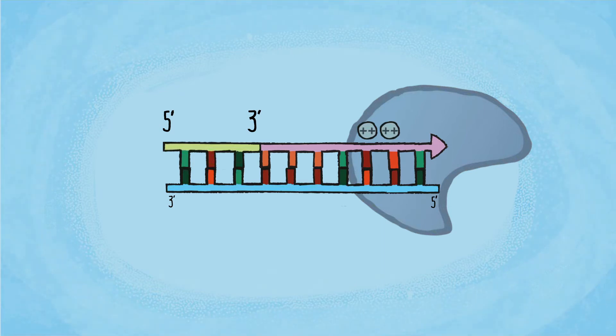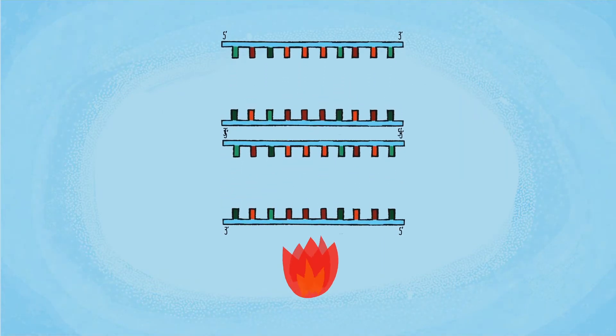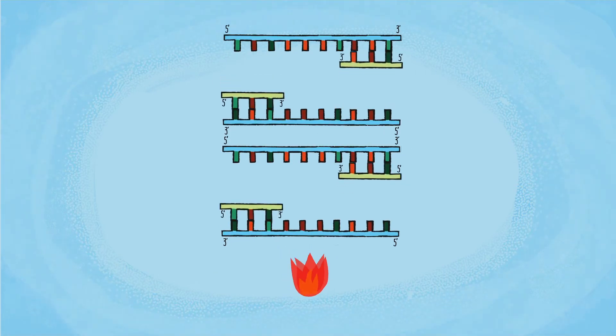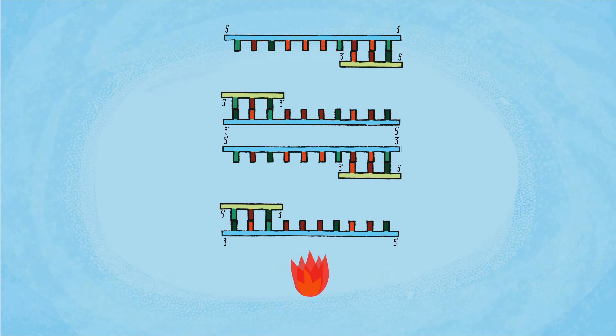A second PCR cycle proceeds the same way. DNA is denatured by heating. The temperature is reduced, allowing the primers to anneal to the single DNA strands, then the DNA polymerase synthesizes the complementary strand.